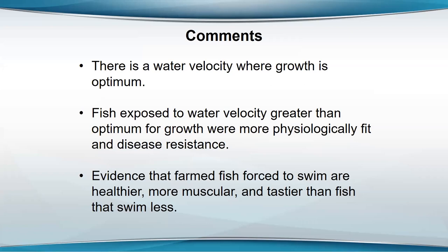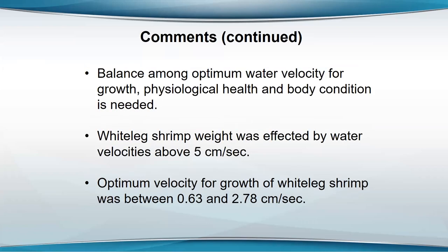If you get too much water velocity, they're going to have to spend so much energy against it that it's not going to be beneficial. We need some balance between optimum water velocity for growth and for fish health and body condition. White-legged shrimp are negatively affected by water velocity — they don't grow as well if velocity is over about five centimeters per second, and the optimum velocity is calculated to be somewhere around 0.63 to 2.78 centimeters per second.